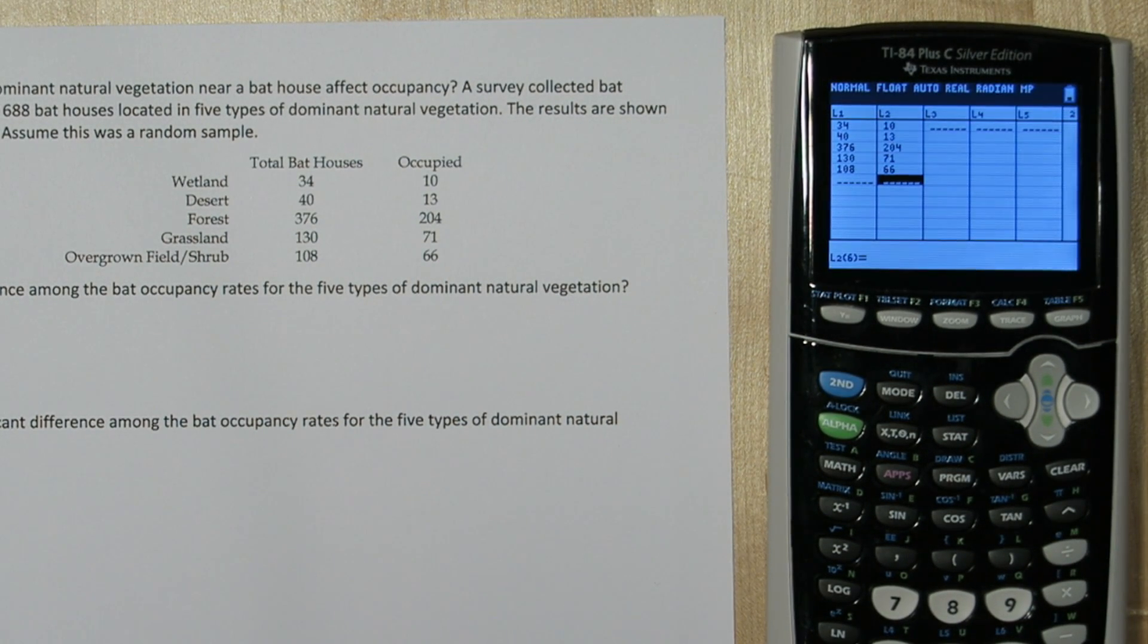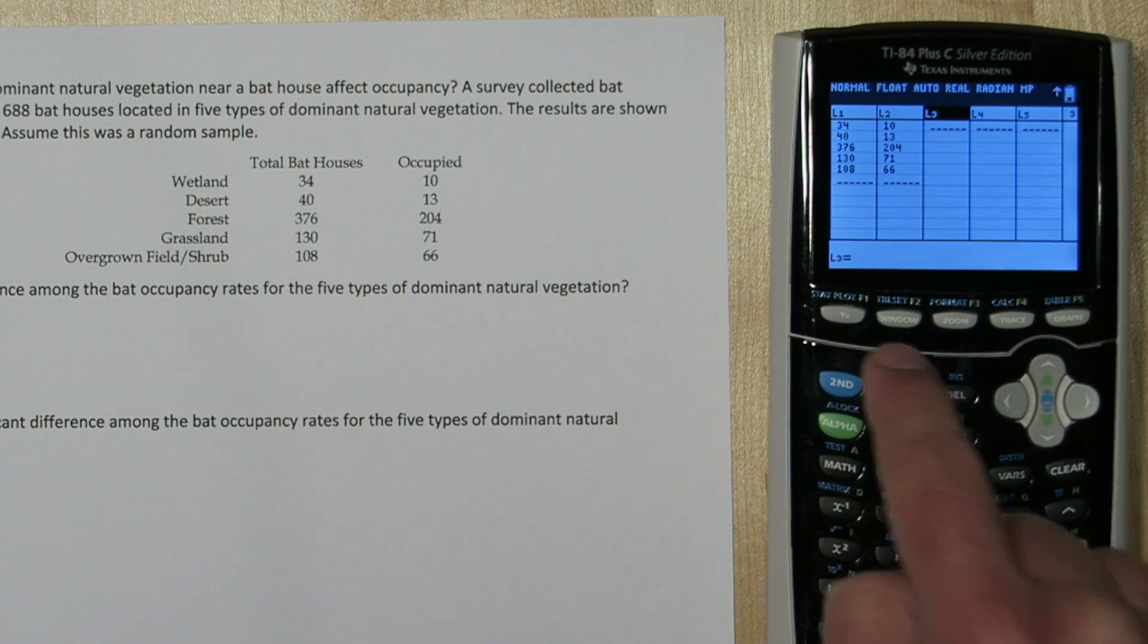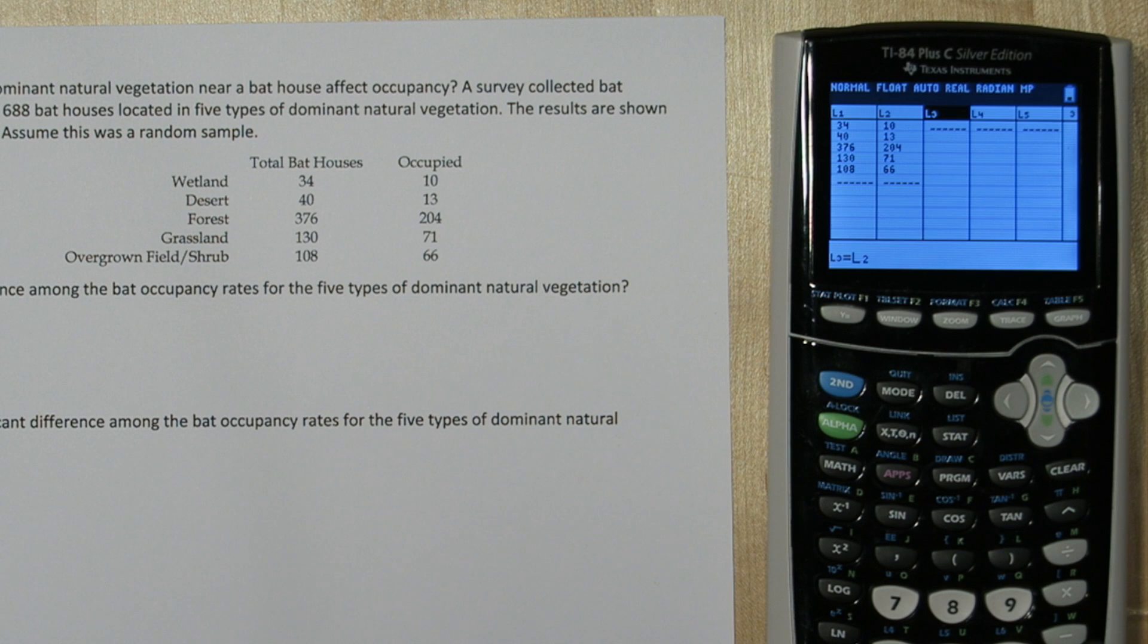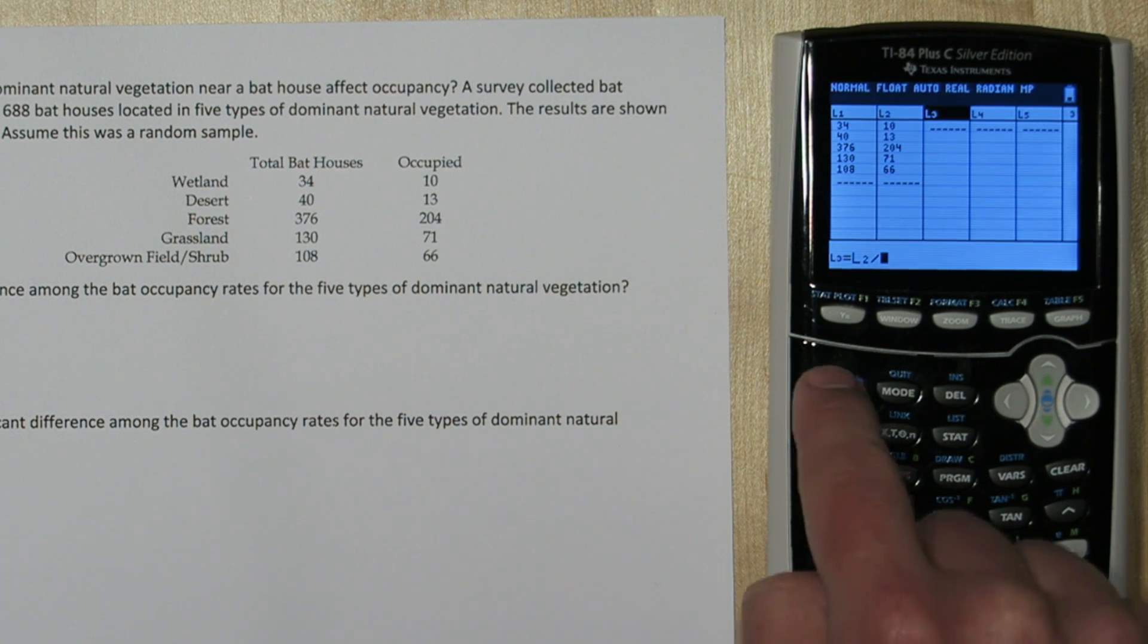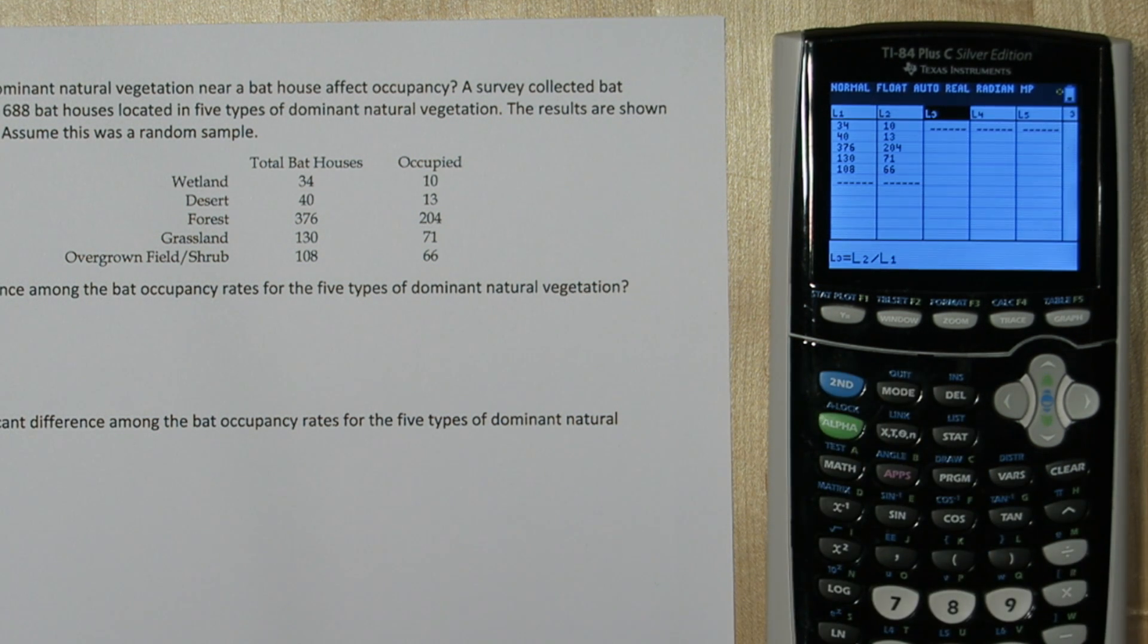To calculate the occupancy rate, we need to divide everything in list 2 by list 1. We can do this all in one big step. Press OVER and then UP so list 3 is highlighted. Down here is your function bar. Take list 2, so I'll press SECOND 2, divide that by list 1, SECOND LIST 1. Now when we press ENTER, we have the occupancy rates for all these different types of dominant natural vegetation.